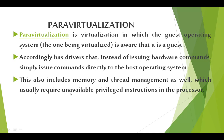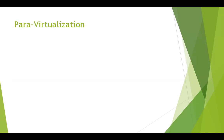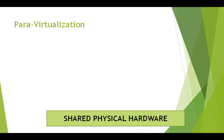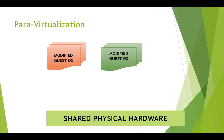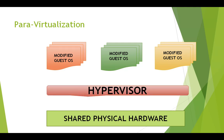A guest operating system that is not modified cannot operate in a para virtualization system. In the diagram, there is shared physical hardware at the bottom upon which several modified guest operating systems are set up. To allow communication between guest operating systems and the shared physical hardware, there is a hypervisor layer — a software that enables virtualization. Different modified guest operating systems directly communicate to this hypervisor layer and send commands in the form of hypercalls.